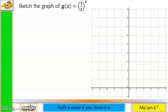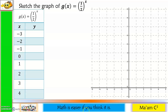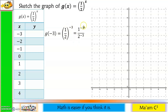Now let us consider g(x) = (1/2) raised to x. We create a table of values with negative and positive x values. For x = -3: g(-3) = (1/2) raised to negative 3. Distributing the exponent and making it positive, we get 2 cubed over 1 cubed, which is 8 over 1, or simply 8. We plot negative 3 at positive 8.